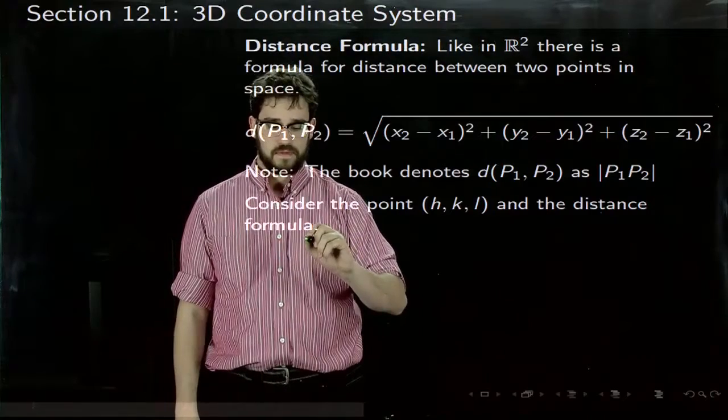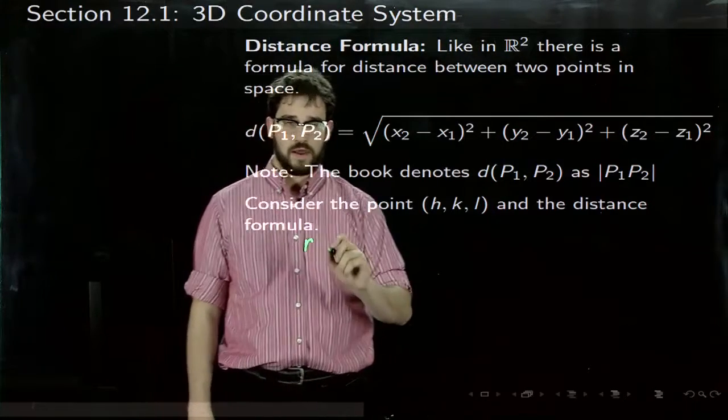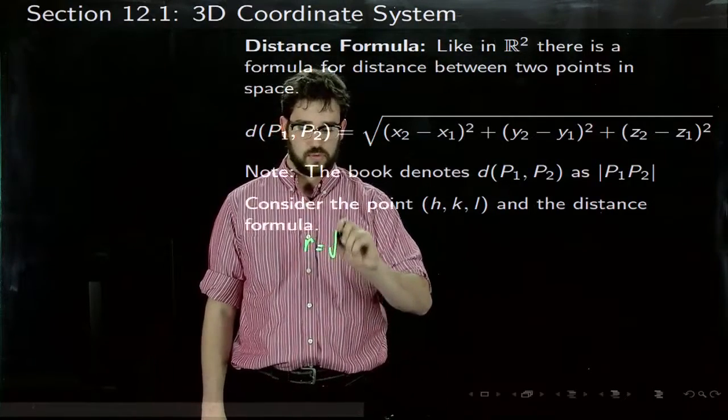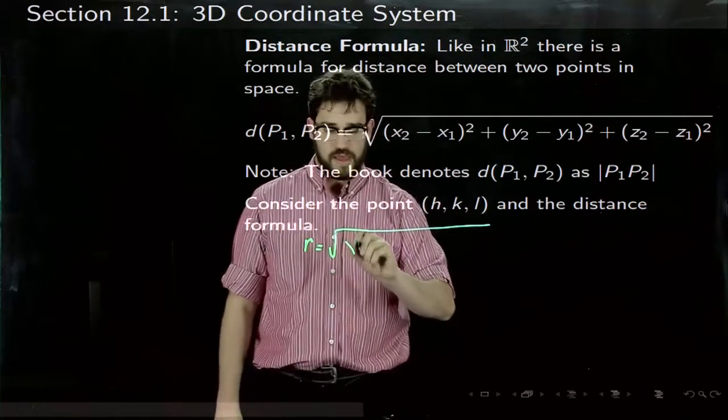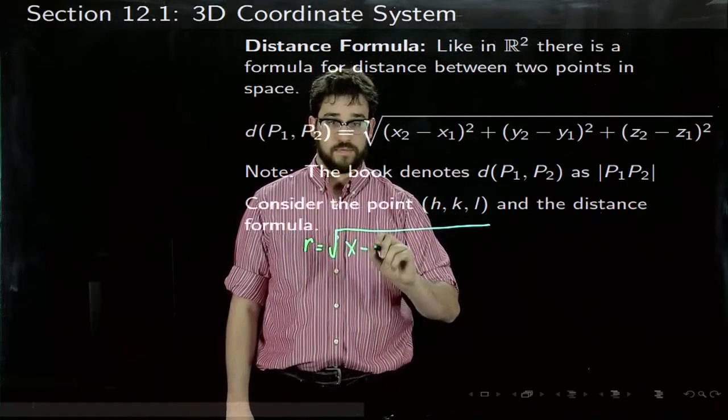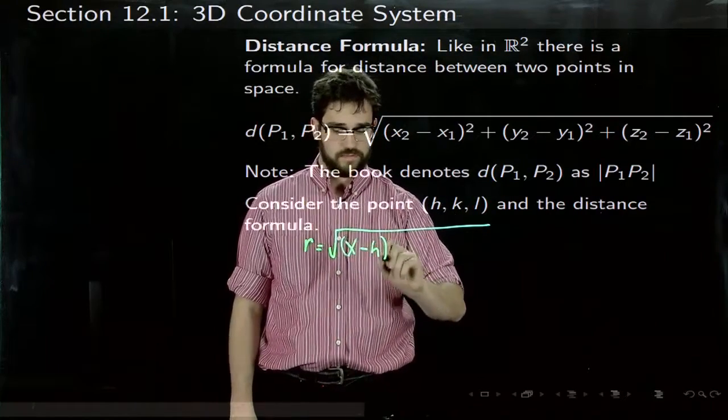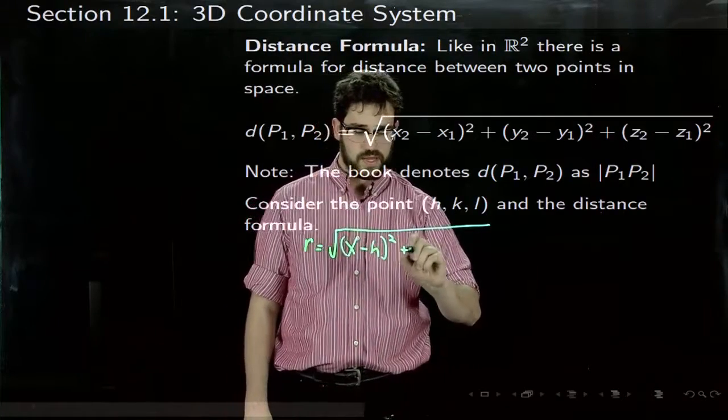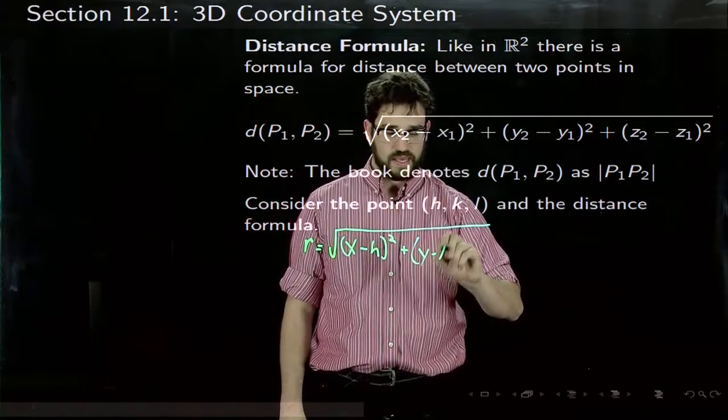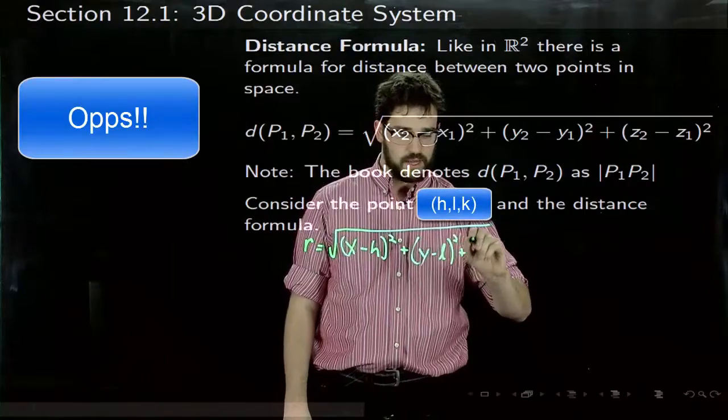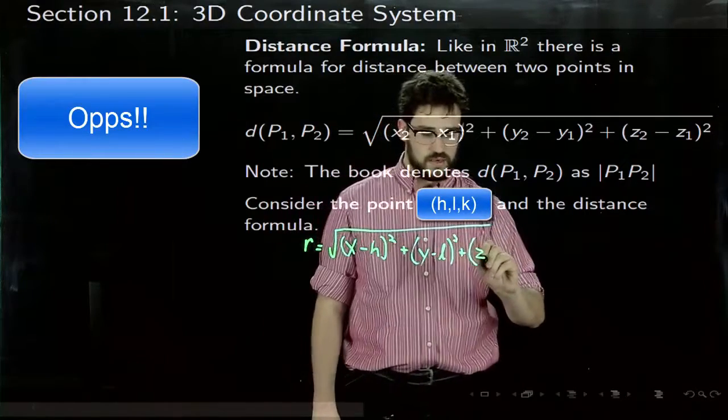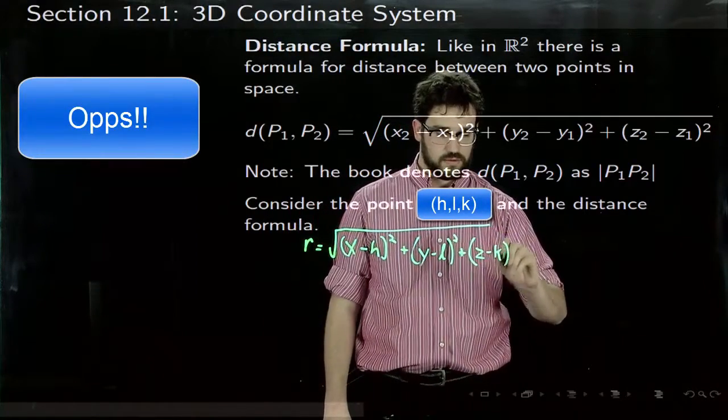So we have R equal to the square root of (x-h)² plus (y-l)² plus (z-k)².